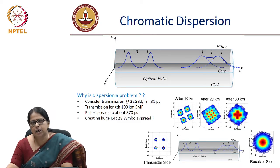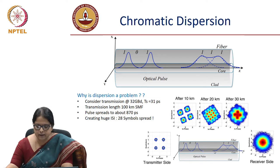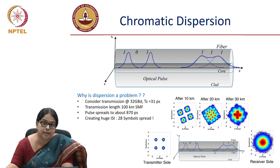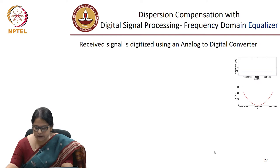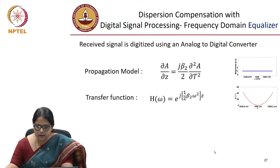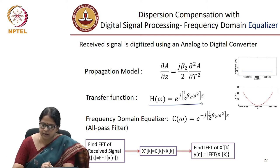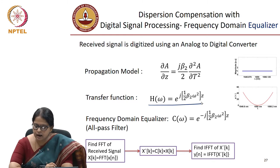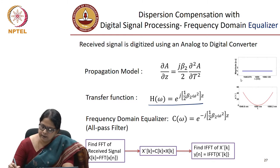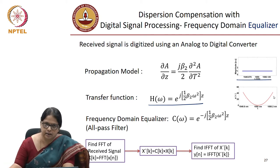The next impairment to be corrected is chromatic dispersion. We have seen chromatic dispersion compensation in our DCF module, the dispersion compensating module. We have also seen this same slide before, where we can model the transfer function due to chromatic dispersion as e^(j * half * beta_2 * omega^2 * z). The amplitude magnitude response is flat and there is a quadratic phase response for this filter.